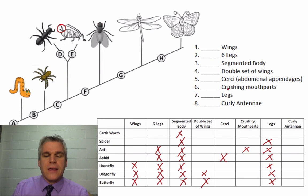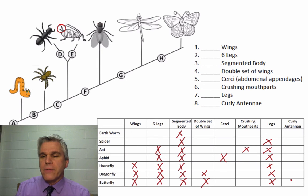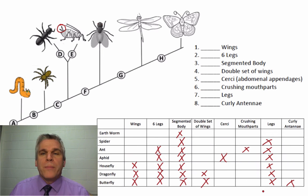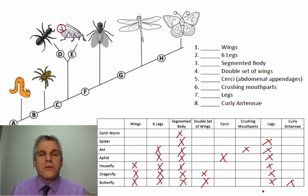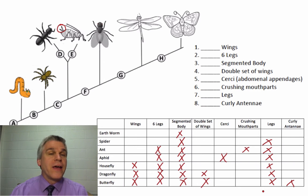And then curly antenna — as I look at that, only the butterfly has that one. How would we break these apart? Well, let's start with the letter A on our cladogram.